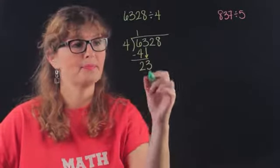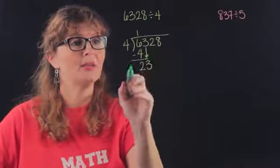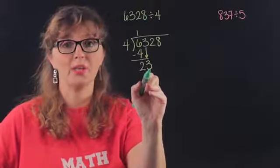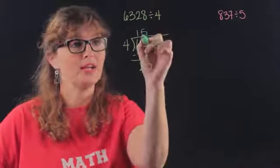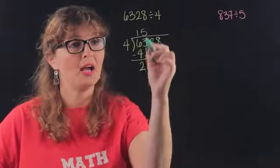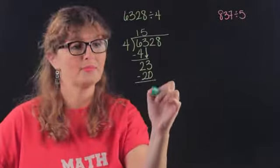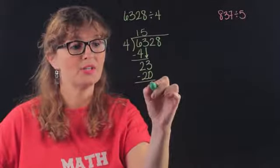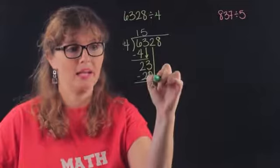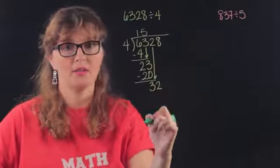And then we do it all over again. We say how many times does four go into twenty-three, five times, then we multiply five times four is twenty, then subtract twenty-three minus twenty is three and bring down again.